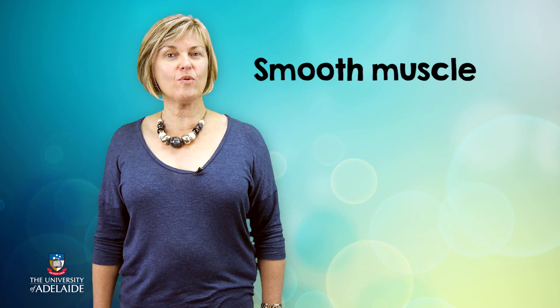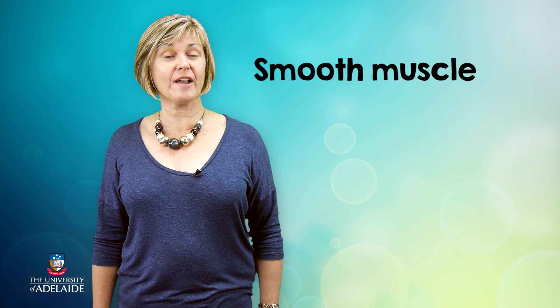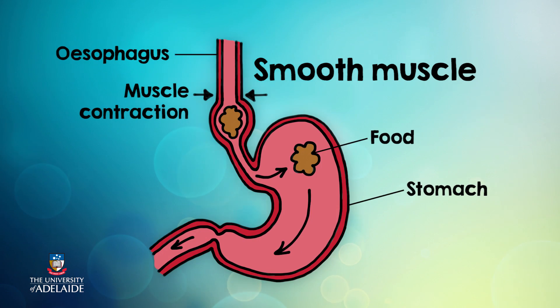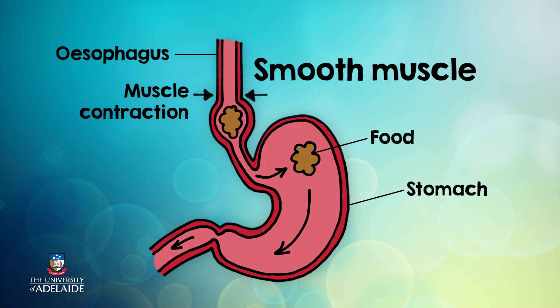The second type of muscle tissue is smooth muscle, found in the walls of many internal organs like our stomach and bladder. They're also involved in movement, but in a different way — smooth muscles move things like food and urine through the internal parts of our body. Whilst this is movement, it's not as obvious as walking, but still just as important.